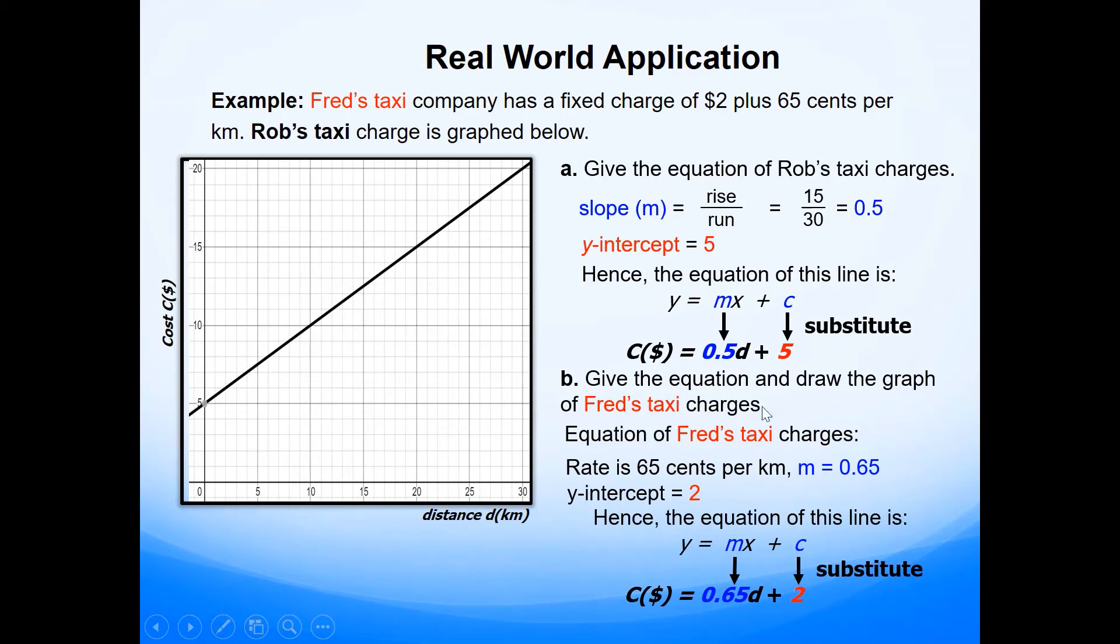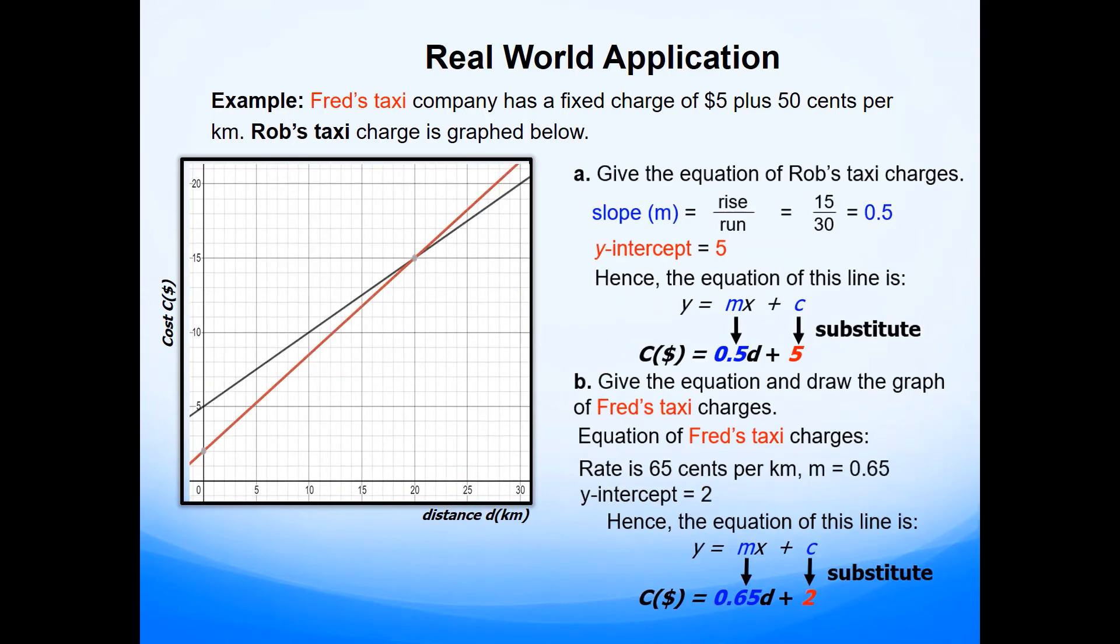The question also says, draw the graph of Fred's taxi charges. So this is the equation. So what we will do is use this equation. You can fill a table of values and then construct the graph. I would suggest if you can pause the video, draw the graph and see if it matches with the answer given. So here's the answer. We've got the red line, which is for Fred's taxi, and the black line indicates the graph for Rob's taxi. Hope you guys got the same answer.